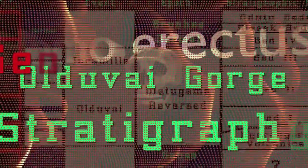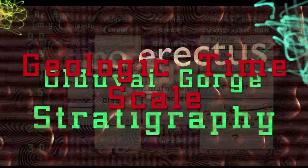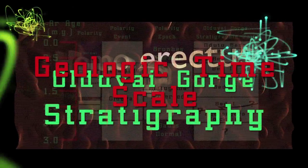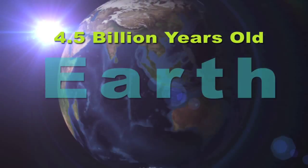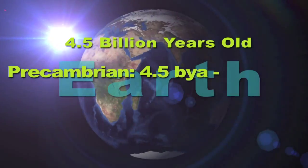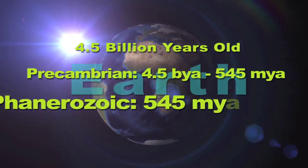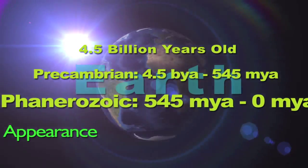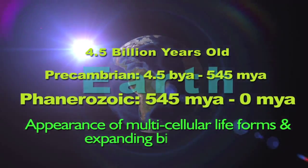All of this field work and dating of rock layers has led geologists to arrive at a geological timescale for the Earth. Let's take a moment to familiarize ourselves with this timescale, as it will give us a reference for our continued quest to look into the fossil record of our human ancestors. The age of the Earth is calculated to be about 4.5 billion years old. This 4.5 billion year history can be divided into two broad stretches of time: the Precambrian and the Phanerozoic. The Precambrian stretches from 4.5 billion years ago to approximately 545 million years ago. The Phanerozoic begins 545 million years ago and is marked by the large-scale appearance of multicellular life forms in the fossil record, marking the beginning of an expansive growth in Earth's biodiversity.